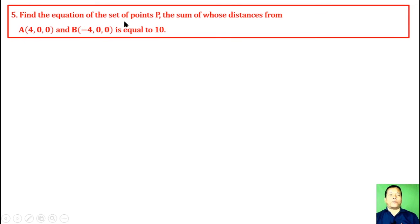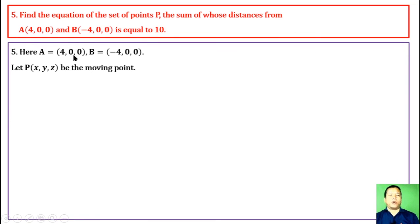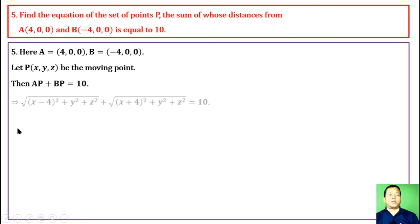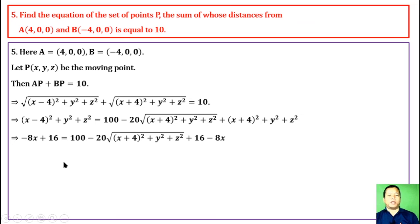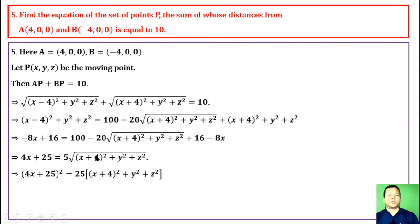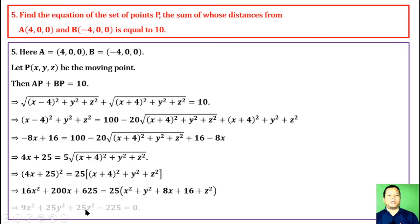Question 5: Find the equation of the set of points P such that the sum of distances from A and B equals 10. Let A and B be the given points and P(x, y, z) be the moving point. Given AP + BP = 10, using the distance formula and transferring one term, squaring, expanding, and simplifying both sides, we obtain the required equation of the set of points P.